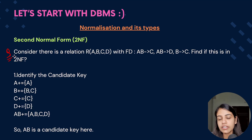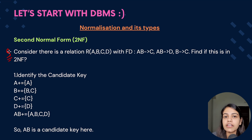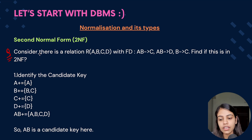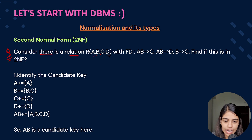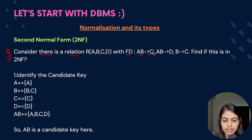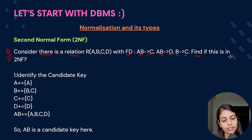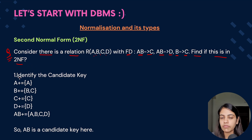Let's solve a practice question. We are provided with some attributes and functional dependencies and we have to determine if the given table is in second normal form or not. Consider a relation R with attributes A, B, C, D. The functional dependencies provided are: AB determines C, AB determines D, and B determines C. Find if this relation is in second normal form or not.